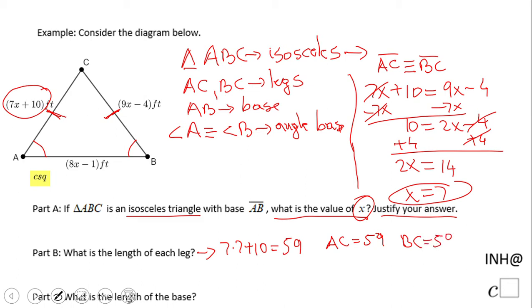Part C, what is the length of the base? The base is 8x minus 1. So we're going to have 8 times 7 minus 1, that's 56 minus 1 equals 55. That's how much the base is.